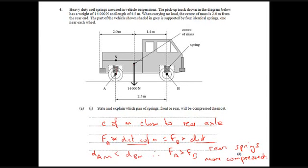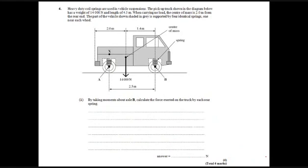So, again, a bit easier to actually just do the numbers. So, take a moment around axle B. Calculate the force on each of the rear springs. So, this is B. Here's the front. So, we're going to take moments about B. Clockwise about B equals anti-clockwise about B. So, this is the one that's making it go clockwise.